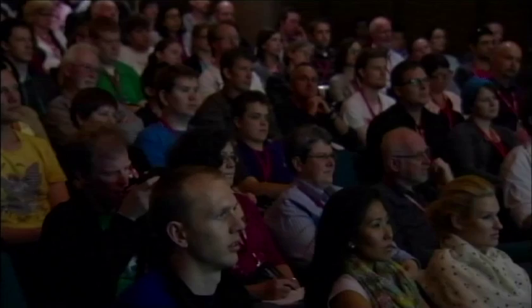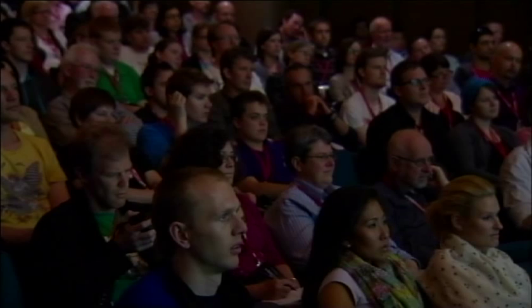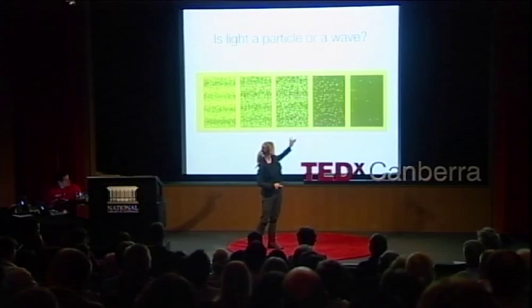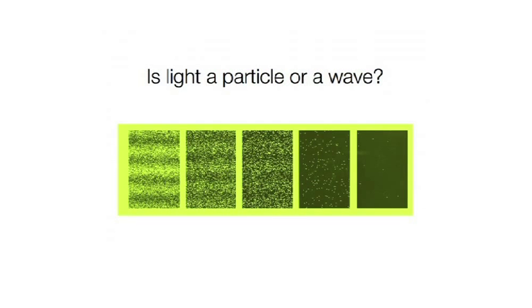We learned how to slow down the Thomas Young experiment so that we release only one photon at a time. When a photon hits the other side — this is actually a picture of photons hitting the other side in this experiment over time. So there are just a few to start with, then there are more. Only one photon at a time, but over time you see those wave patterns. The same wave pattern emerges.